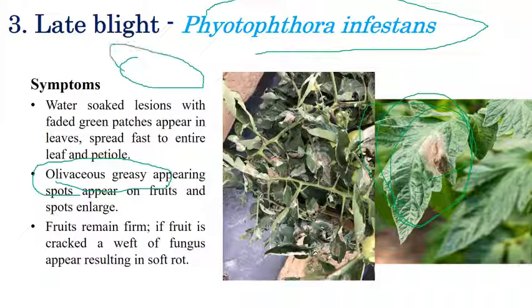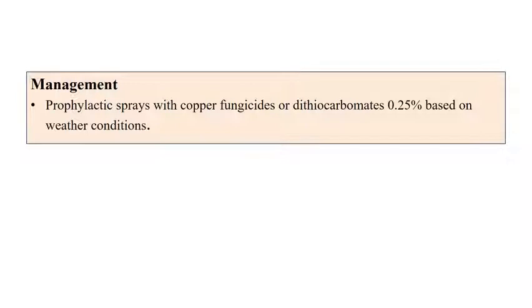Late blight of potato will be discussed in detail in a later class, as the evolution of plant pathology as a subject is linked to this disease. In fruits, they may remain firm, or cracking and mycelial growth can be observed in very rare cases. On leaves, olivaceous greasy spots along with water-soaked lesions are the key symptoms.